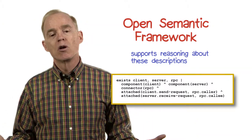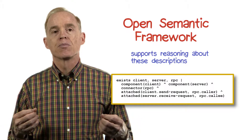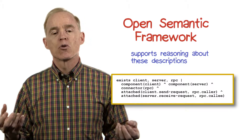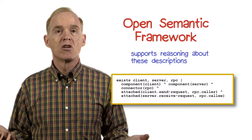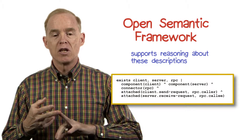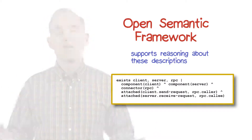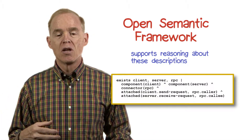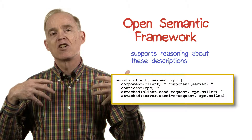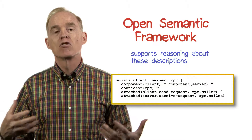There's an example here for the client-server situation, and it's essentially an English language keyword version of first order logic. It says that there exists a thing called client, a thing called server, a thing called RPC, such that client is a component, server is a component, RPC is a connector, and that they're attached in a way we've described. This contains exactly the information we saw in the Acme description, but now it's in a form that can be dealt with by a theorem prover or automatic reasoning system.